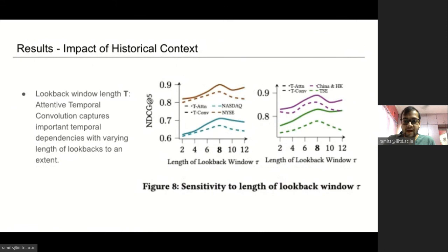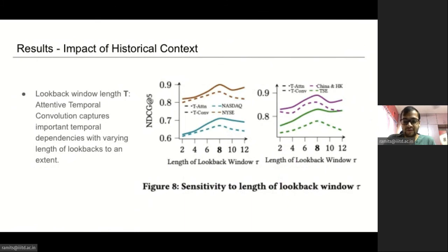We further probe the impact of historical context in stock prediction by studying the variation in HyperStock GAT's performance with varying lengths of the lookback window. We observe that shorter lookbacks lead to poorer performance, likely due to lower market information in the window. As we increase the window length, larger lookbacks include state information having lower influence on stock prediction, deteriorating performance. However, HyperStock GAT using temporal attention is able to selectively filter crucial information from longer windows to an extent.